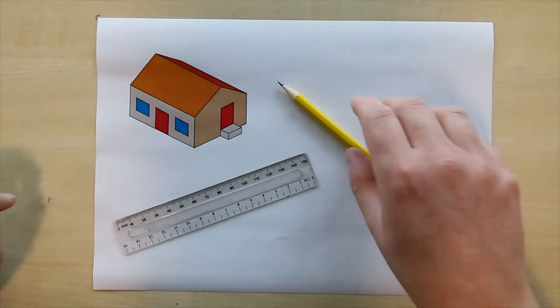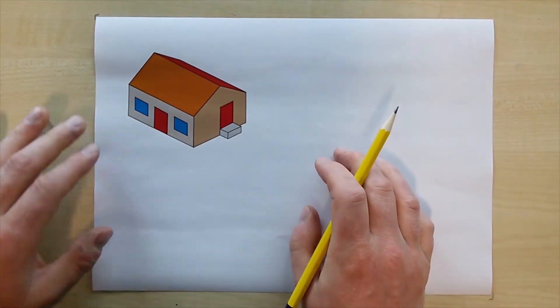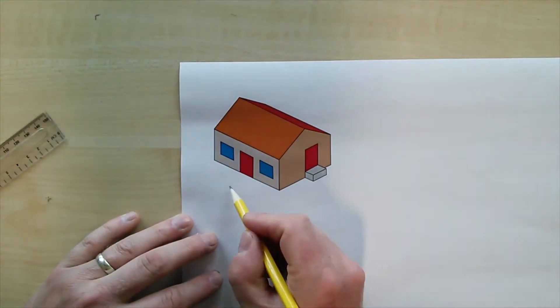Now we start off with this little 3D view of a simple house and we're going to draw three views of the front, the side and the top.